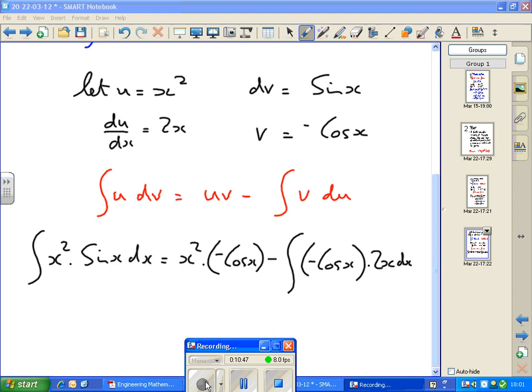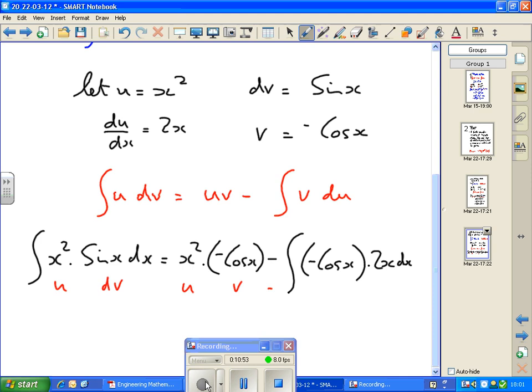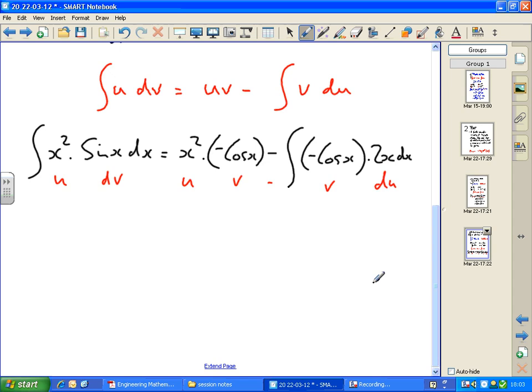Now plug them into my integration by parts formula. And if you do your revision as you should, by the time you've finished you'll be saying this in your sleep. Integral of u dv equals uv minus integral v du. So the integral of u dv, which is in other words the problem, what we've got to do equals uv, x squared times v which is minus cos x, minus the integral of v dv which is minus cos x times du which is 2x.